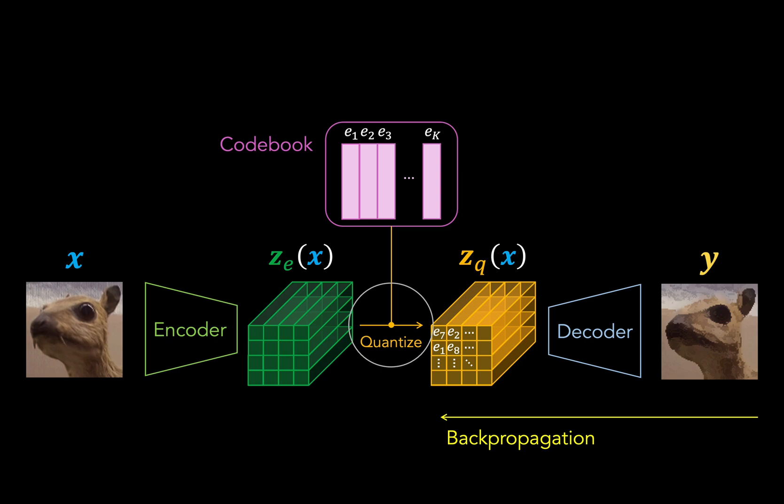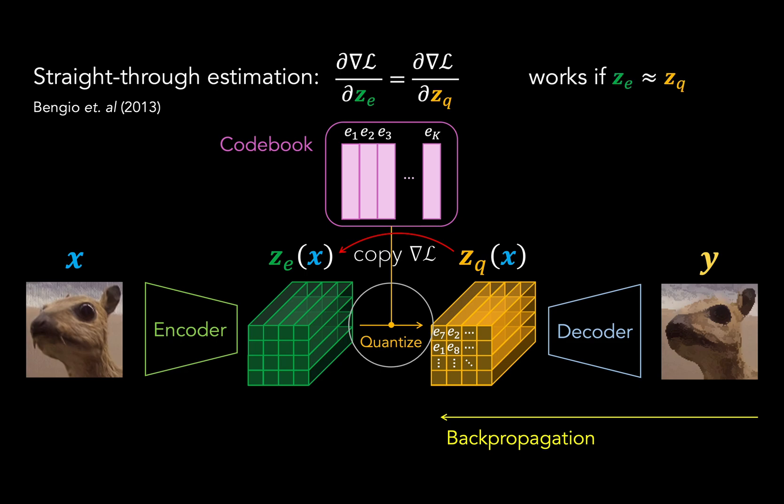The very simple solution is to simply copy over the gradients from ZQ to ZE. In other words, the gradient is simply passed straight through the quantization layer, which is why this trick is called straight through estimation. We're basically estimating the gradient that ZE should get using the gradient of ZQ as an approximation. Now the use of straight through estimation would work best in this context if ZQ were a good approximation of ZE. And this is why it makes sense to use a nearest neighbor lookup as our quantization procedure.